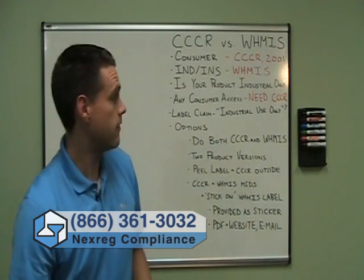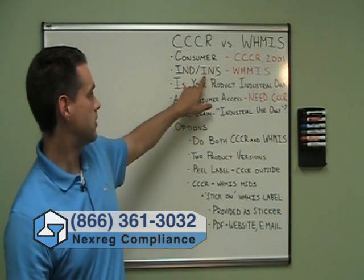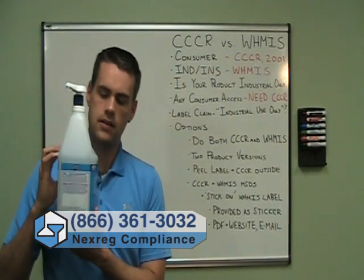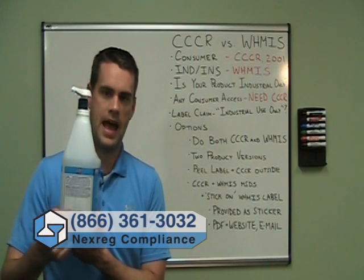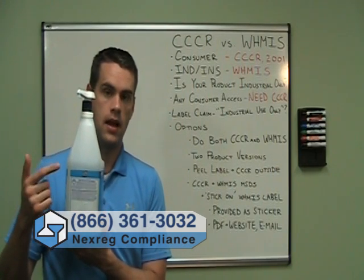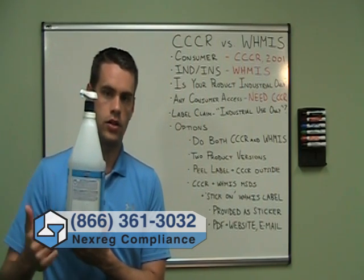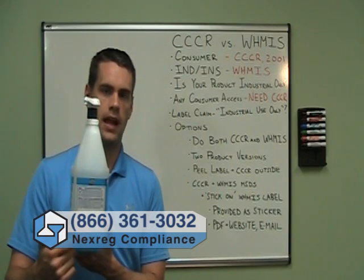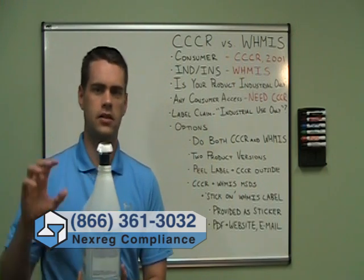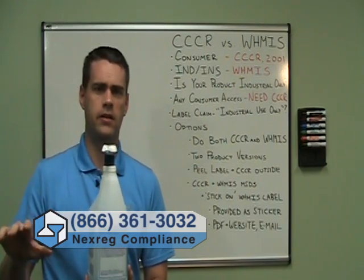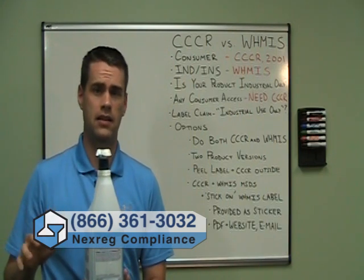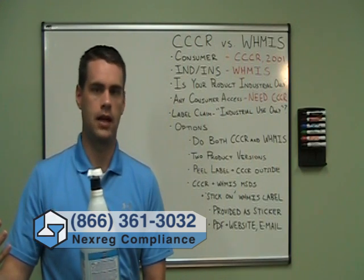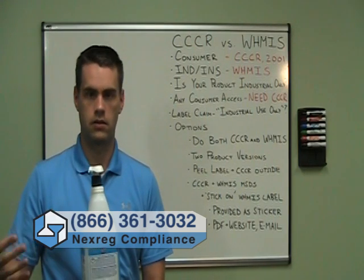There's a second labeling standard strictly for industrial or institutional products called WHMIS. Here's an example of a WHMIS label, and it looks a bit different. We have a hatched border, a symbol, and text in both English and French. In the WHMIS label, all the information is self-contained on this panel, whereas in the CCCR some of it was on the front, some on the back, with different symbols and different text — so they're quite different because they serve different needs for different types of users.